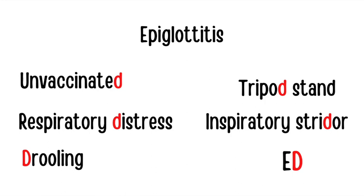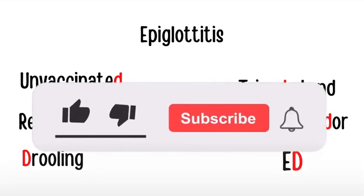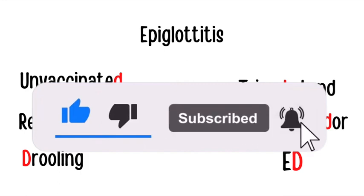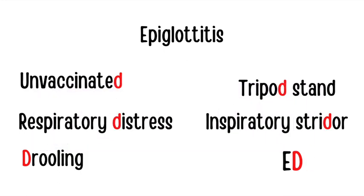Remember that epiglottitis is an emergency. These patients present acutely in respiratory distress with the classic tripod stance, drooling, difficulty breathing, and an exam favorite is that the child is unvaccinated. They have an inspiratory stridor, and these patients will have to present to the emergency department for treatment.